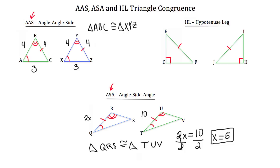If either leg is congruent — for example, leg ED is congruent to HI — then the two triangles are congruent using the hypotenuse leg postulate. Alternatively, if DF is congruent to HJ, it's still congruent by the hypotenuse leg postulate. It doesn't matter which leg you use, so long as you have the hypotenuse and one leg.